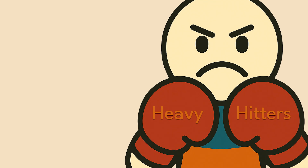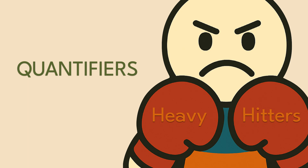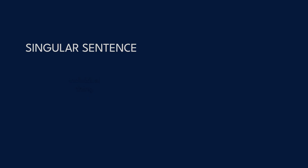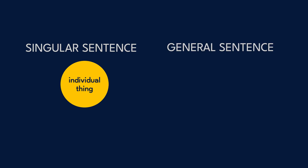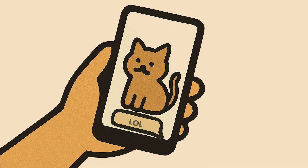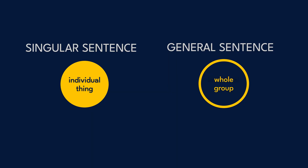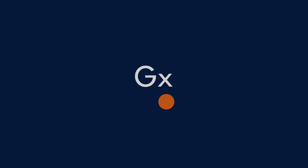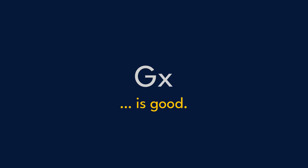And now you're ready for the heavy hitters: quantifiers. Unlike a singular sentence about an individual thing, a general sentence — like 'all group chats devolve into memes' — is about a whole group. That's where quantifiers and variables come in. If I write 'X is G,' the X is a variable, not an individual constant like T for Taylor or L for LeBron. It doesn't really stand for anything. So 'GX' might say, for example, 'is good' — with an empty slot. The X is just a placeholder.